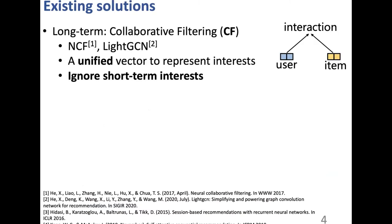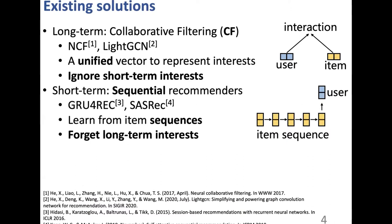Next, let me introduce existing solutions. These methods can be roughly divided into three categories. The first is long-term recommenders, mostly based on collaborative filtering, which learn a unified vector to represent interest and ignore short-term interest. The second category is short-term recommenders, also known as sequential recommenders, which learn from item sequences. However, these models tend to have short memory and forget long-term interest. So the above two categories only capture one single aspect.